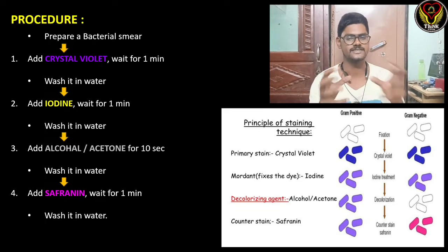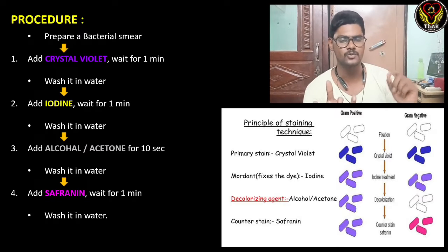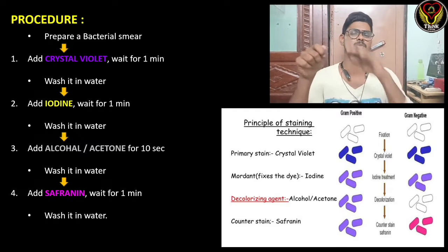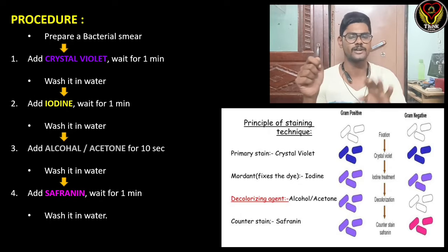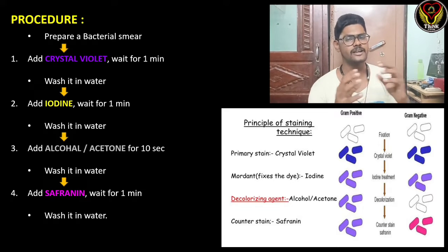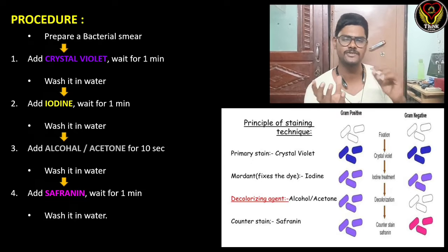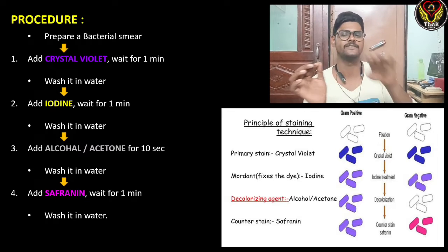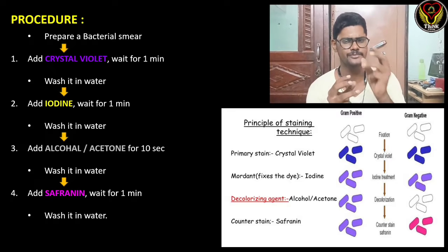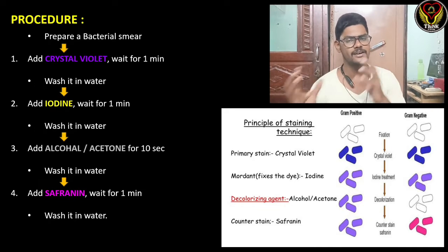The first step of this technique is to add crystal violet, our primary stain, and leave it for one minute. After one minute, we wash it with water. The second step is to add iodine and wait for one minute, then wash it again with water.